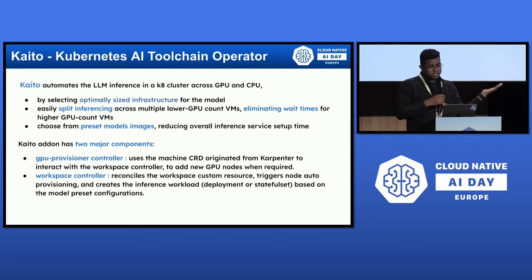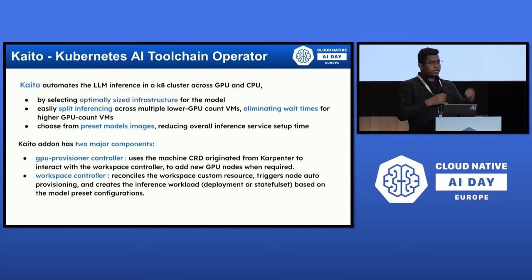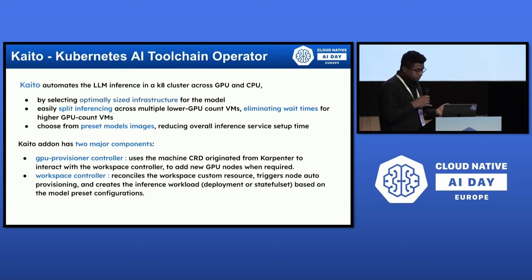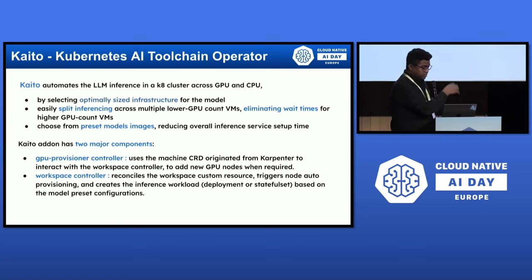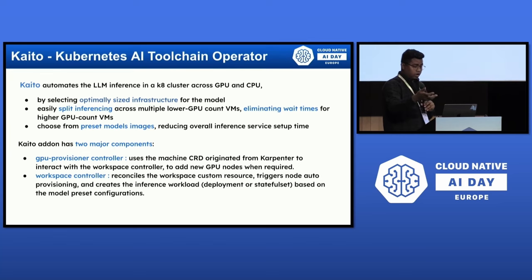It easily splits inference across multiple lower-tier GPUs. If your model needs an A100 but you can't get one from a cloud provider, you can still run it on a cluster of L4 GPUs in a distributed fashion. This eliminates wait time for higher-end GPU virtual machines. It also provides preset model servers and model images.